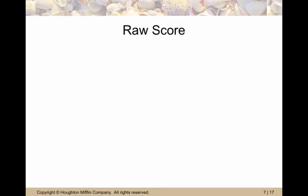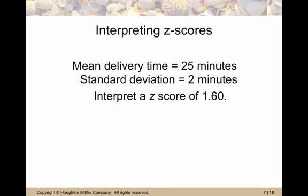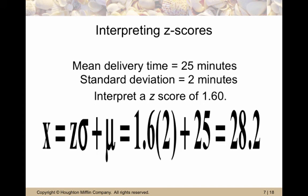Now we can work backwards to get the raw score. It's just the result of converting from standard units, the z-scores, back to the original measurements, the x values. The formula for this is just an algebraic manipulation of the z-score formula. And it's x equals z times sigma plus mu. So if the mean delivery time is still 25 minutes and the standard deviation is still 2 minutes, interpret a z-score of 1.60. So we want to know the delivery time that is 1.6 standard deviations above the mean. So we're going to use our formula of z times sigma plus mu. So that's going to be 1.6 times 2 plus 25. So 3.2 plus 25, so 28.2 minutes.